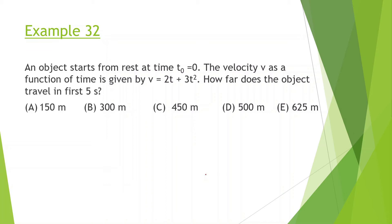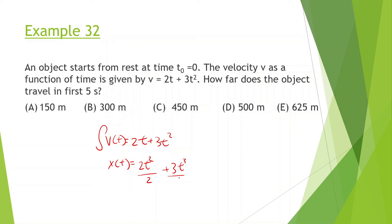An object starts from rest at t = 0. The velocity as a function of time is given by v = 2t + 3t². How far does the object travel in the first 5 seconds? Taking the integral to find position: 2t²/2 + 3t³/3. Plugging in t = 5: 5² + 5³ = 25 + 125 = 150 meters.